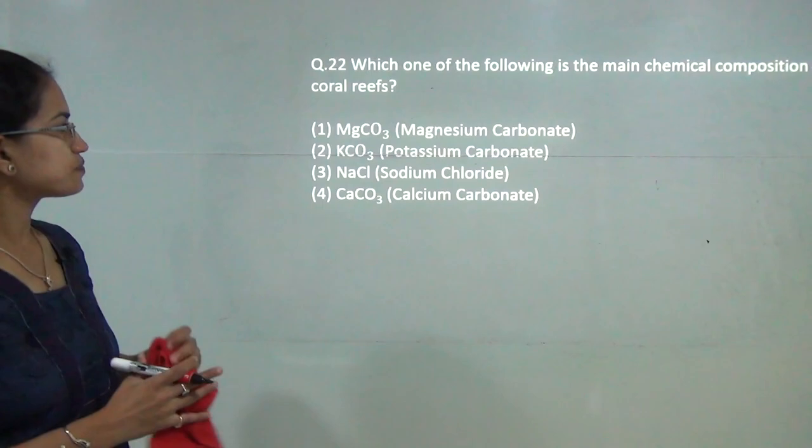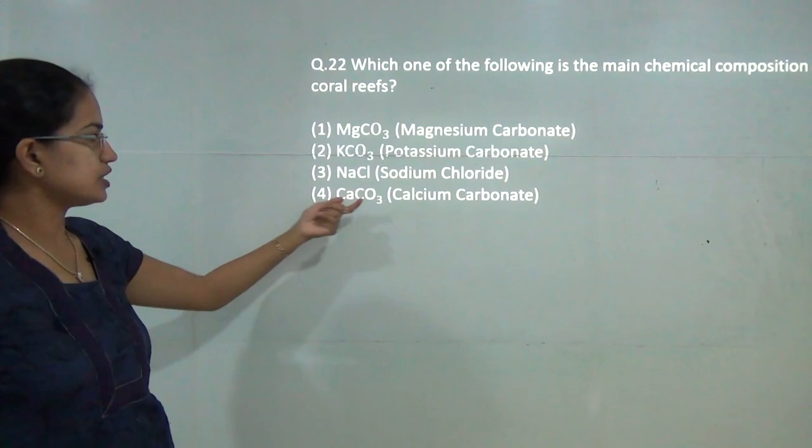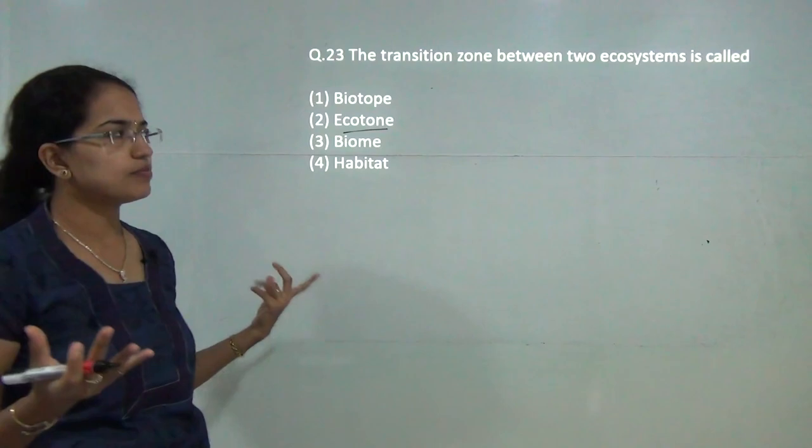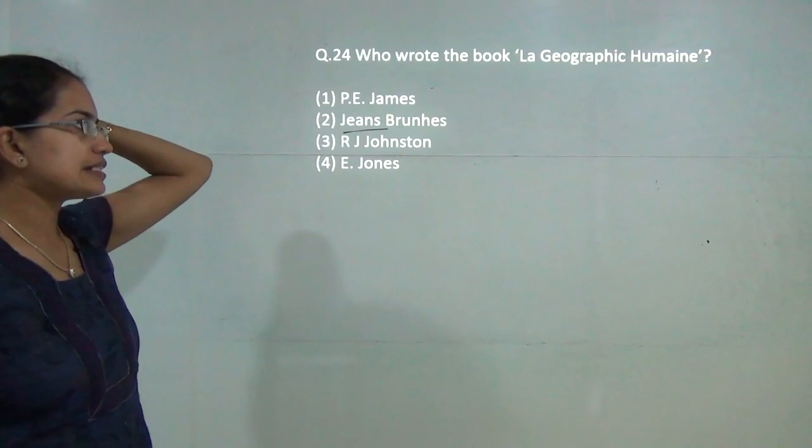Next question, which of the following is the main chemical composition for the coral reefs? CaCO3, that is calcium carbonate is the correct answer. Next question, the transition zone between 2 ecosystems is known as ecotone. Ecotone is the transition between 2 ecosystems or 2 biomes, we call it as ecotone.